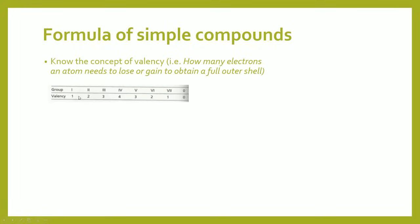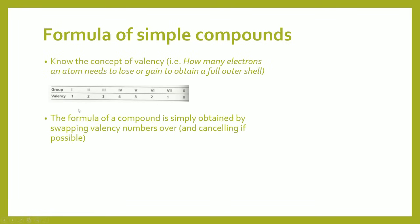What you mainly need to understand is the concept of valency. Group 1 has a valency of 1 because it needs to lose 1 electron. Group 7 has a valency of 1 also because it needs to gain 1 electron. Whether it's losing or gaining, the valency is how many electrons need to be gained or lost in order to achieve a full outer shell — that's very, very important. The formula of a compound is simply obtained by swapping the valency numbers over and cancelling if possible.